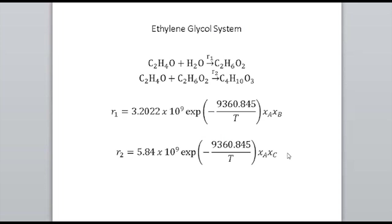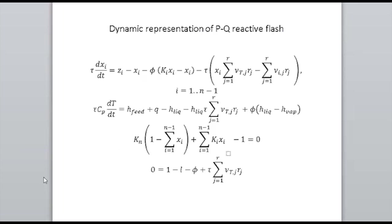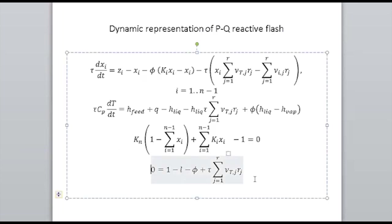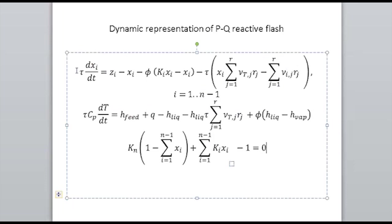A question from the audience: what index is this system — the reactive flash column? The answer is index two. Going back to the equations: the x vector is your liquid mole fractions and temperature, and your y vector is simply the vapor fraction phi. So this is index two and it is actually in Hessenberg form as well.